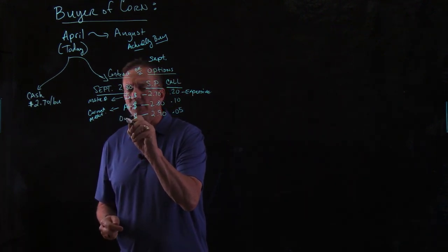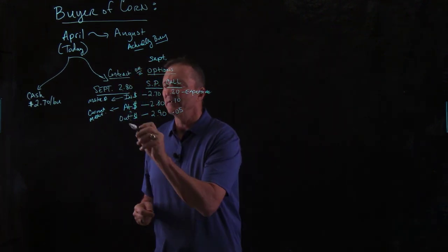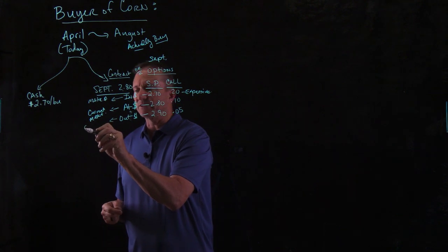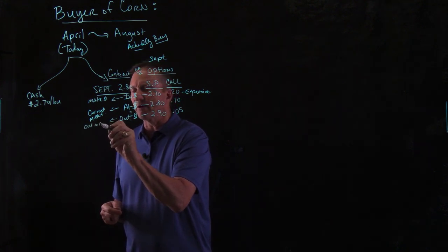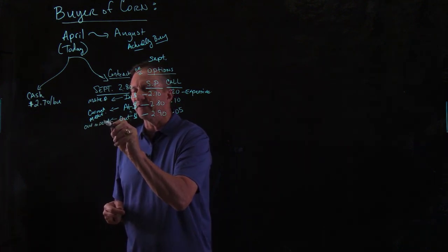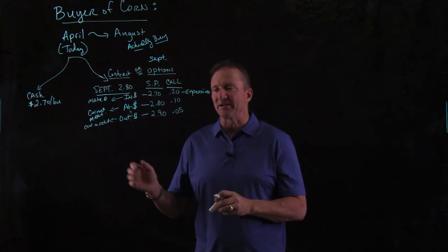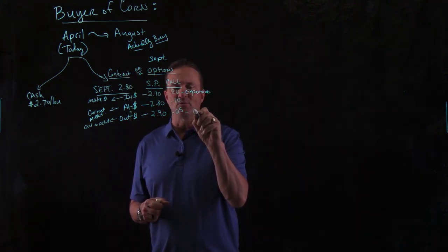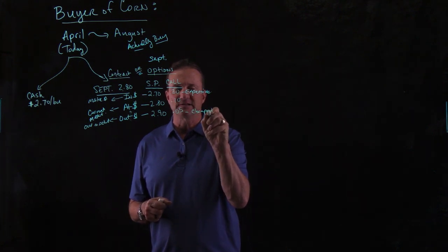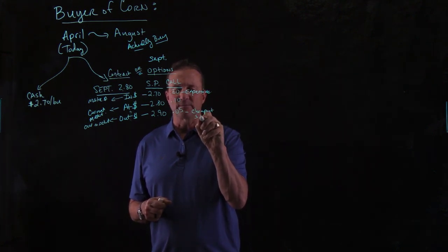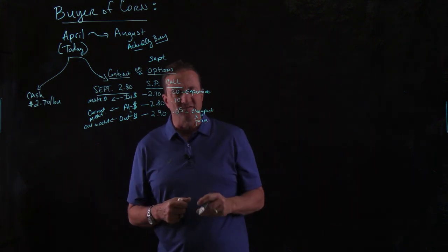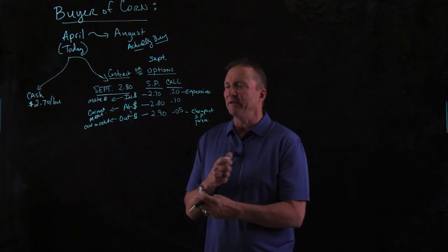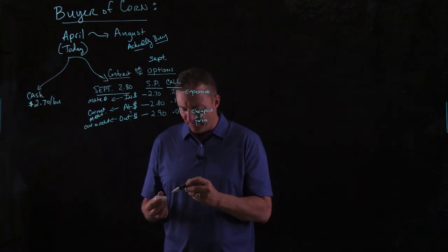That is called out of the money. That is going to be out of the market, meaning it is not right there in the market — it's out of the market. And in fact, this is the one that is the cheapest strike price premium.